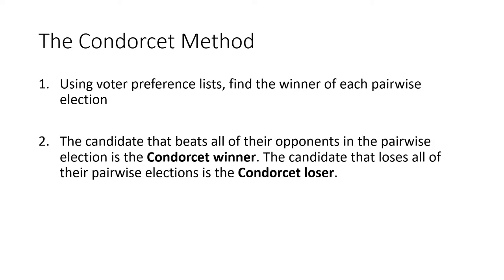So here's the Condorcet method. We use those voter preference lists, find the winner of every pairwise election — A versus B, A versus C, and so on. The candidate that beats all of their opponents in the pairwise elections is called the Condorcet winner — the candidate who beats everybody one-on-one. And the candidate that loses all of their pairwise elections, the candidate that gets beat in every one-on-one election, we call that candidate the Condorcet loser.